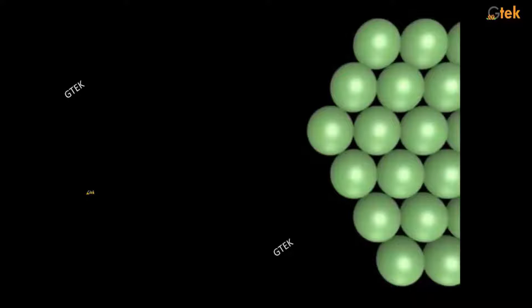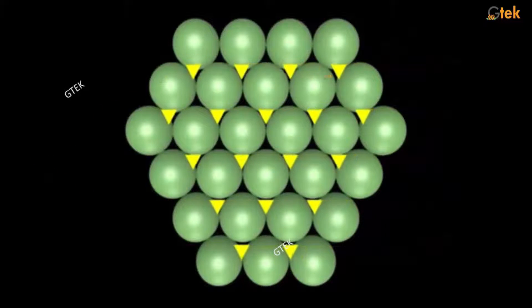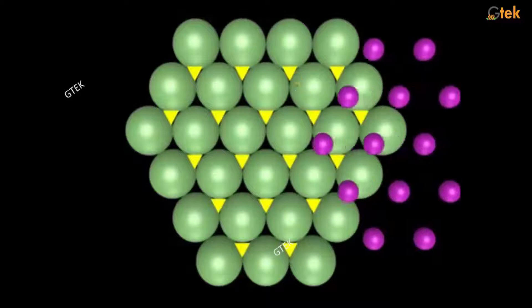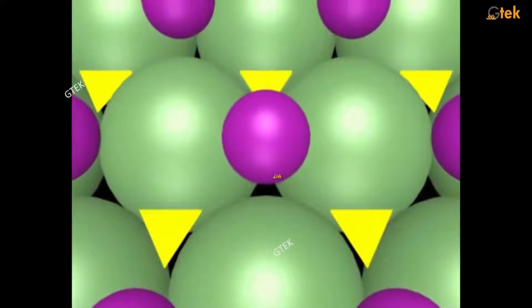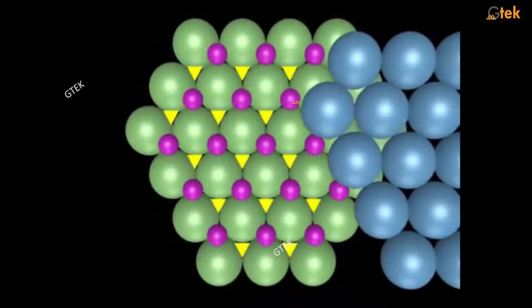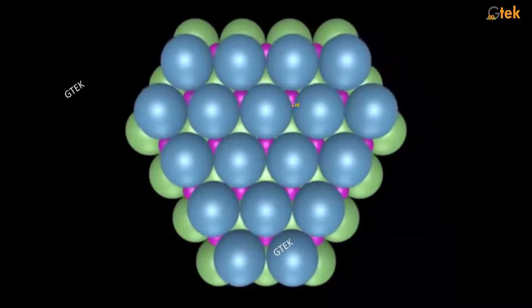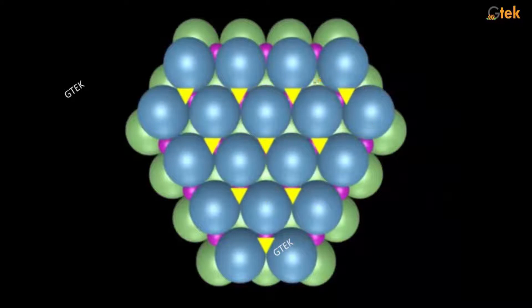Now let's look at how the octahedral components are tightly packed. One element is shown linked, with gaps available that can be filled with another element. You can see the gap is filled by another component or element, and this is how two things form a specific compound. On top of it, the original compound is placed and the gaps are once again filled by the other compound.